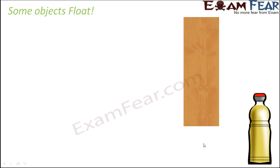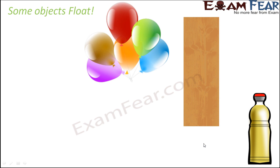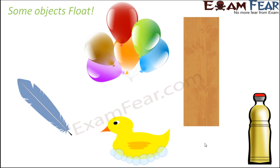Some common examples of objects that float in water include mustard oil and wood — both solids and liquids can float. If you take a plank of wood and put it into a river, it remains on the surface and keeps floating. Balloons and balls found near sea beach areas also float on the surface. Plastic toys made of rubber also tend to float, and a feather, being very light, also floats on water.